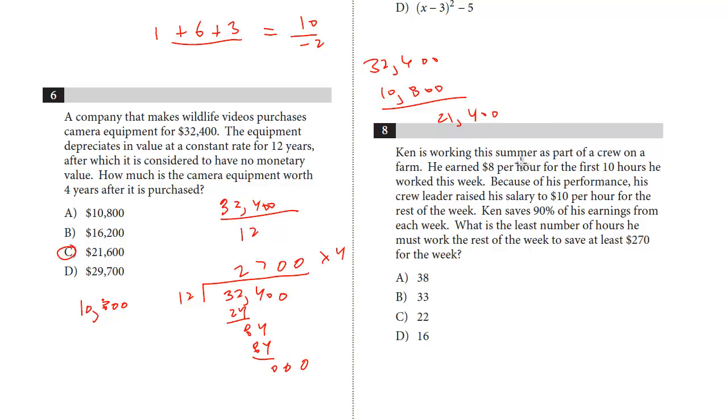Ken is working this summer as part of a crew on a farm. He earned $8 per hour for the first 10 hours he worked this week. Because of his performance, his crew leader raised his salary to $10 an hour for the rest of the week. Ken saves 90% of his earnings from each week. What is the least number of hours he must work the rest of the week to save at least $270 for the week? A little bit of a bulky question.